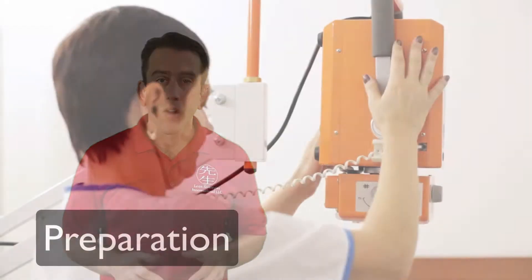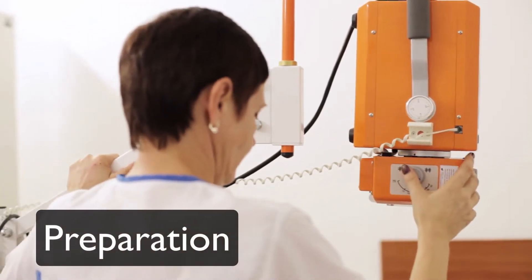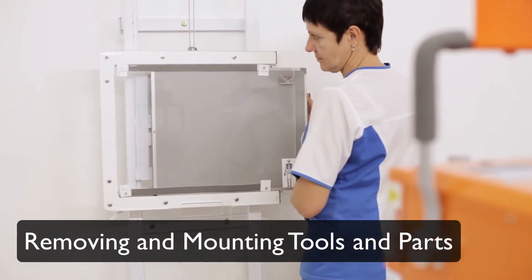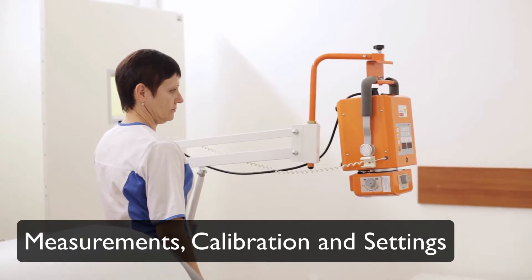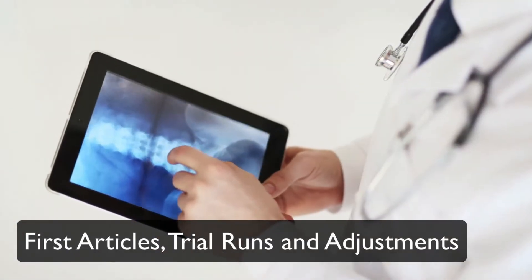Before improving anything, we must first consider the current state or common problem areas of what we are improving. In the case of setups, changeovers, or turnarounds, there are traditionally four basic steps or areas where problems and opportunities fall. Those steps are preparation, removing and mounting tools and parts, measurements calibration and settings, and finally first articles trial runs and adjustments.